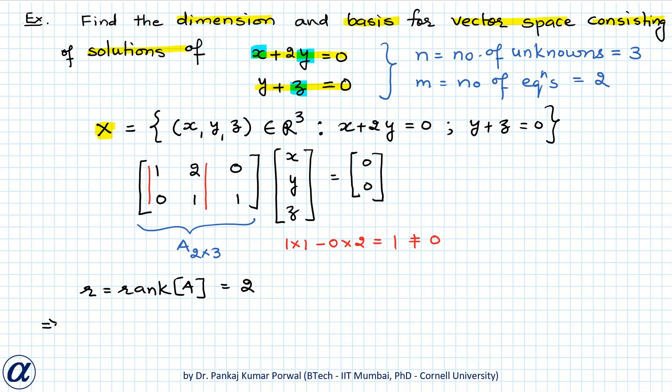So this implies that there will be n minus R, that is 3 minus 2 equals 1, free variable in solution of our system of equations. And that will also be equal to the dimension of our vector space consisting of solutions of this homogeneous system of equations, and R, that is 2, constrained variables that we have to solve for using our equations.